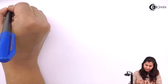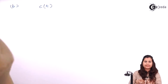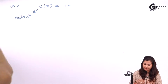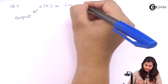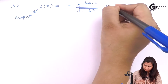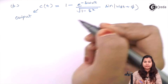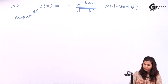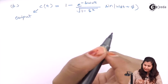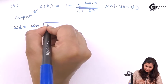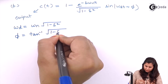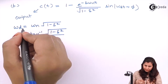For the second part, we determine the time response c(t) of the system. For a second-order control system, the time response is given by: c(t) = 1 − e^(−delta·ωn·t) / √(1−delta²) · sin(ωd·t + φ), where ωd = ωn·√(1−delta²) is the damped frequency, and φ = tan⁻¹(√(1−delta²) / delta).